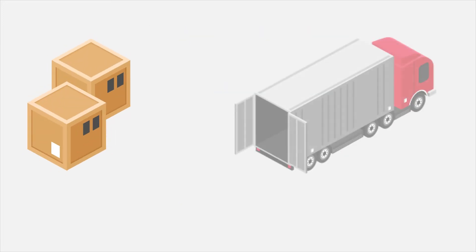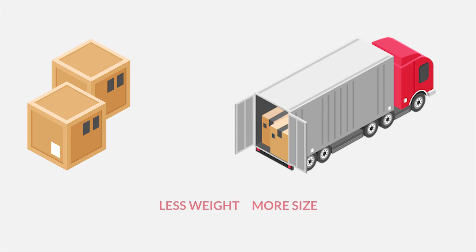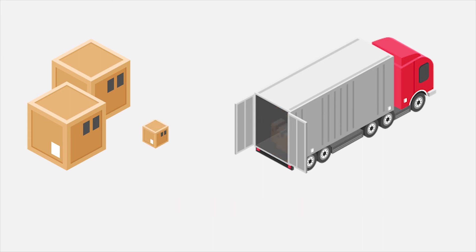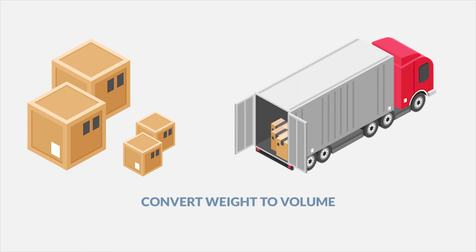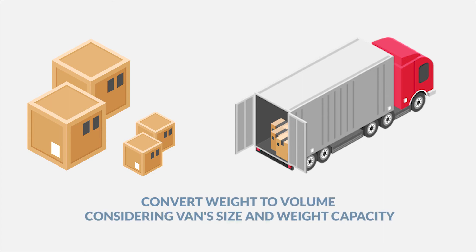The larger size box will fill up the van transporting these goods but will not even touch the weight capacity of the van, whereas the smaller boxes will reach the weight capacity of the van but may leave it half full. We have therefore calculated a way to convert weight to volume, to take into consideration the van's size and weight capacity limitation, which depends and varies on the type of transportation used.